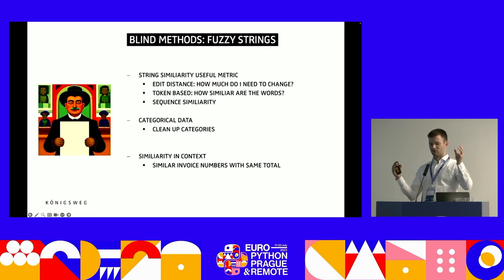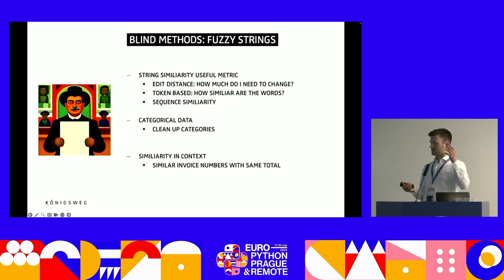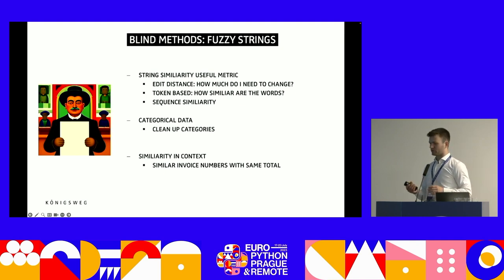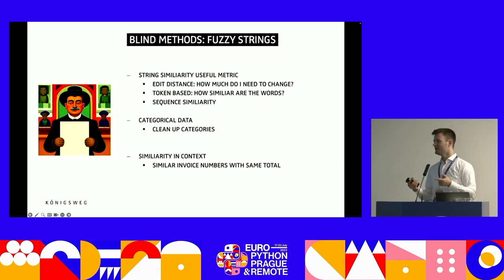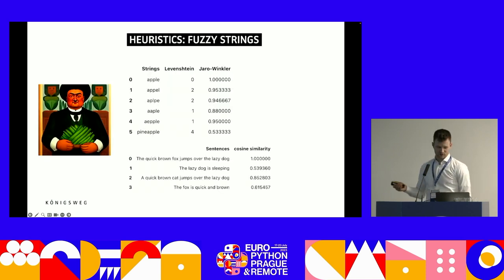There are many ways to get a similarity score between strings and texts, and you can use these to clean up categories. If most of your data falls into four categories but there are a few others, string similarity might reveal they're just typos. In our context, we found similar invoice numbers using string similarity — combined with matching transfer amounts, we could identify duplicated payments. People didn't know an invoice had already been processed, but we could save money by catching this.